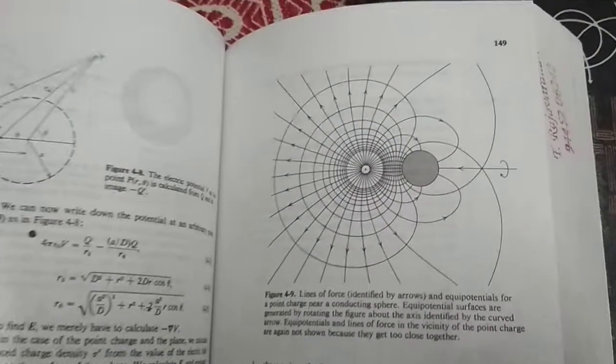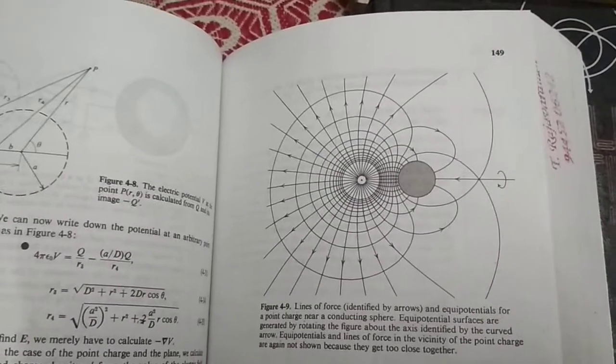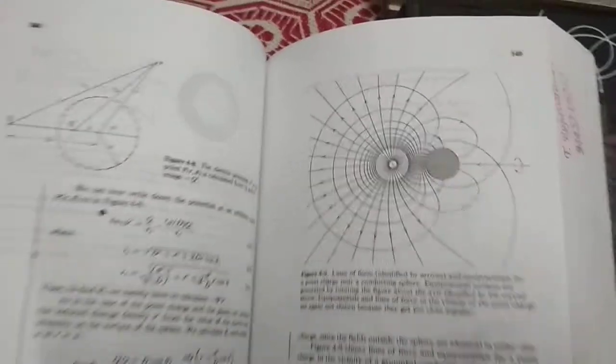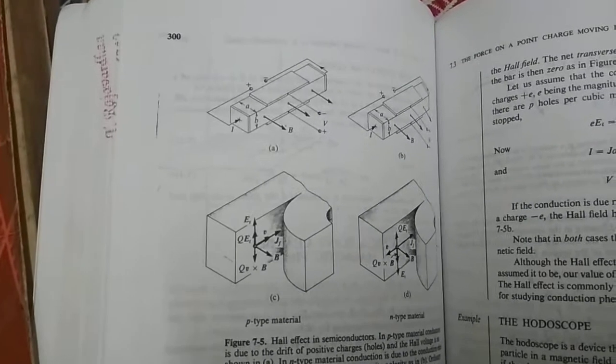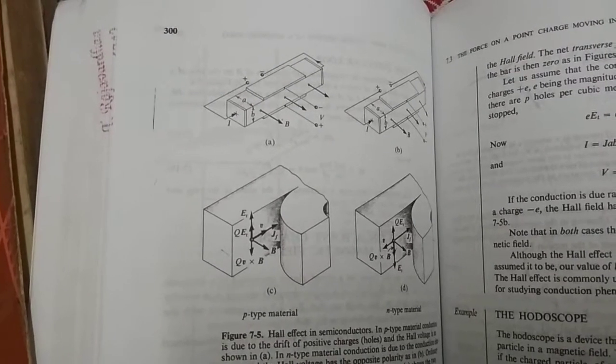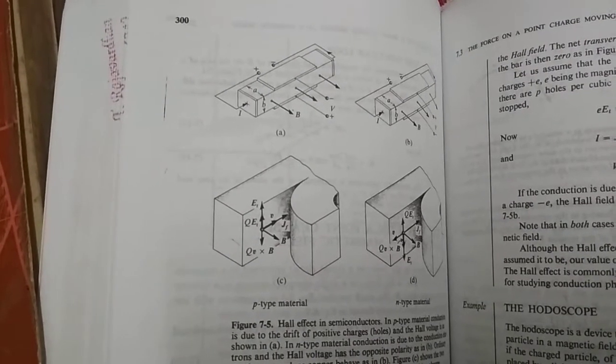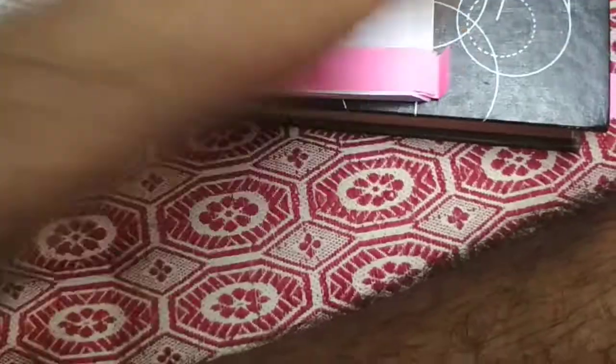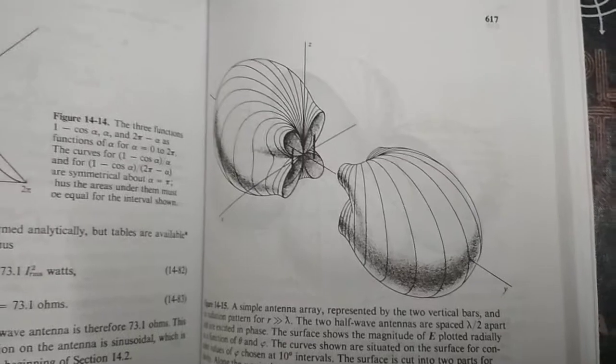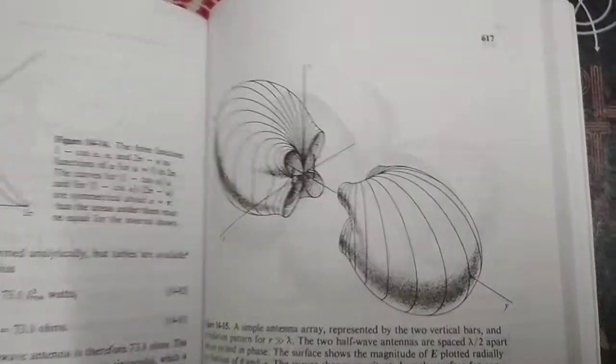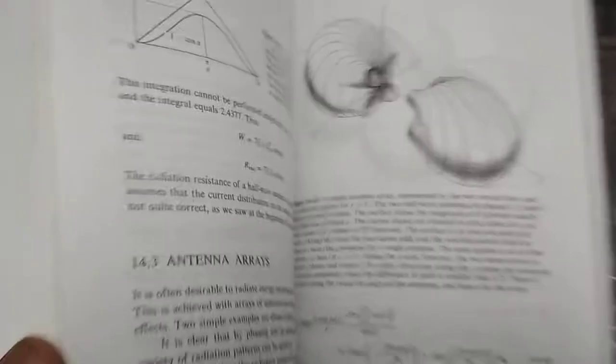Here is a picture showing the field around a charge in the vicinity of a sphere. Here you can see the Hall effect in semiconductors, how electrons and holes behave when electric field and magnetic field are present. Here is a picture of the electromagnetic fields in a rectangular waveguide, and here is the radiation from a two-element dipole array.